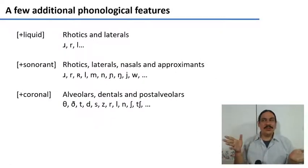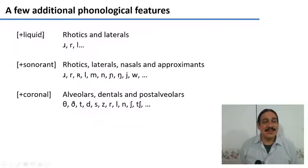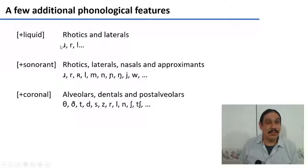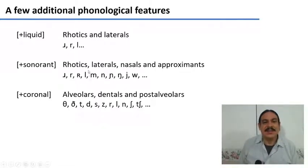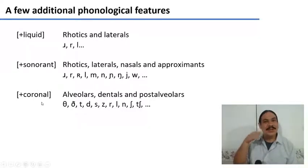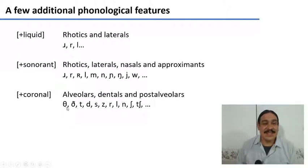Here are a few additional features used in phonological rules. The feature [+liquid] describes the class that includes rhotics — r-like sounds — and laterals like L. The feature [+sonorant] includes rhotics, laterals, nasals like M and N, and approximants. Another very useful feature is [+coronal], which covers everything around the alveolar ridge: teeth, the ridge, and just after the ridge. It includes dental and interdental sounds like theta, alveolar sounds, and post-alveolar sounds like the ash sound.